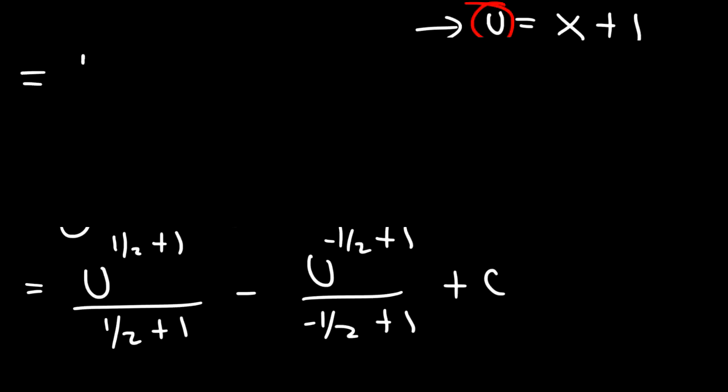1 half plus 1 is 3 over 2. Negative 1 half plus 1 is 1 over 2.